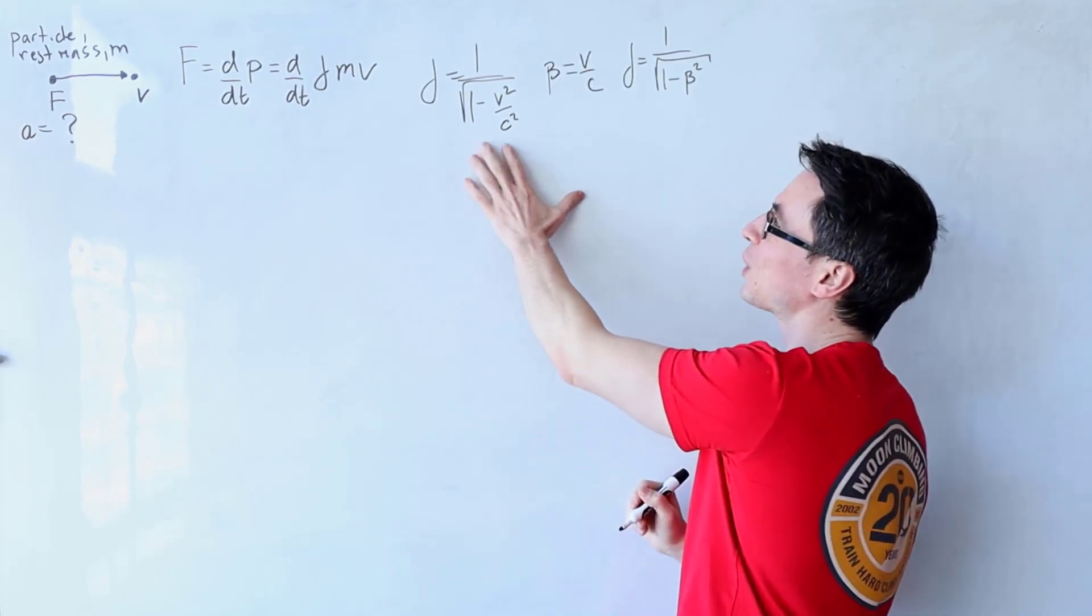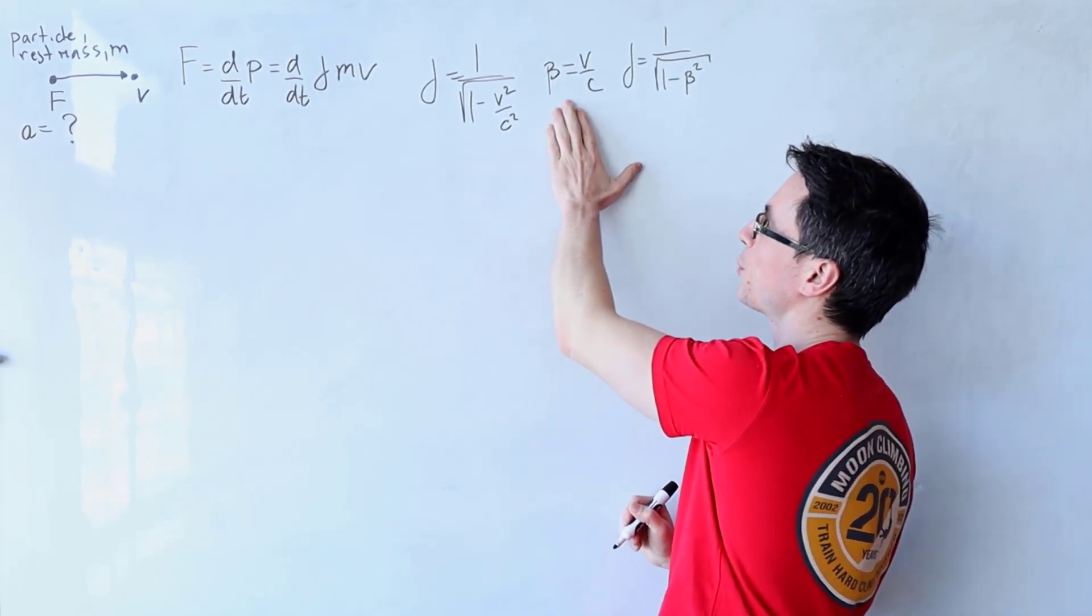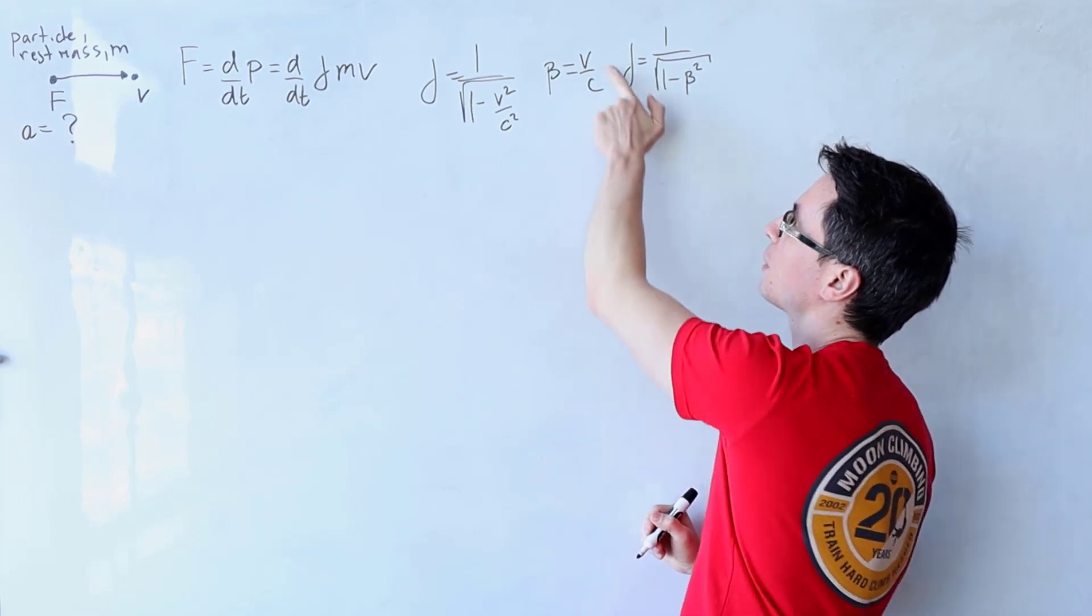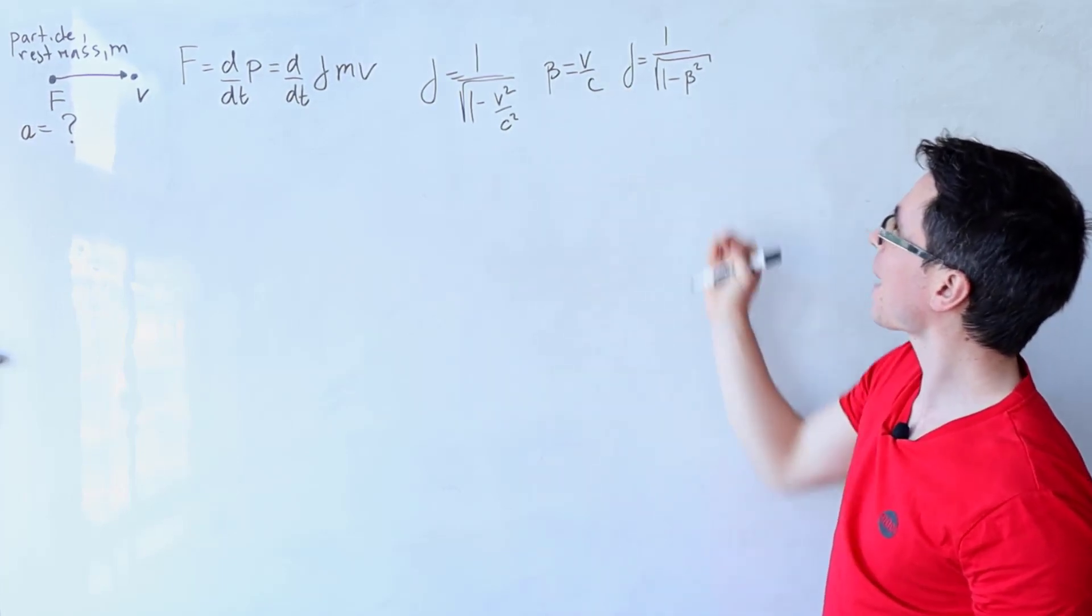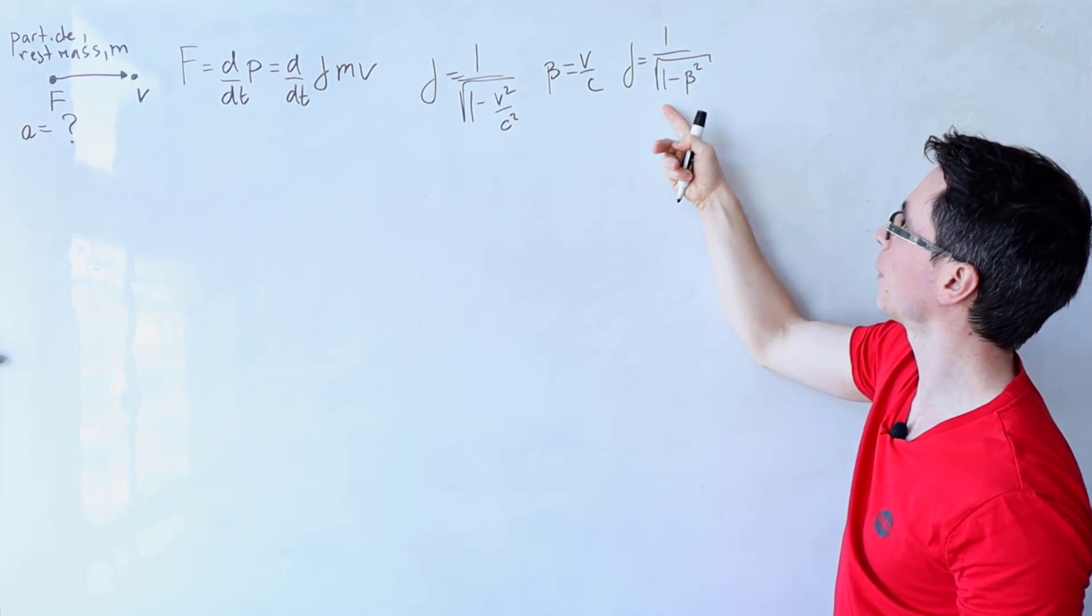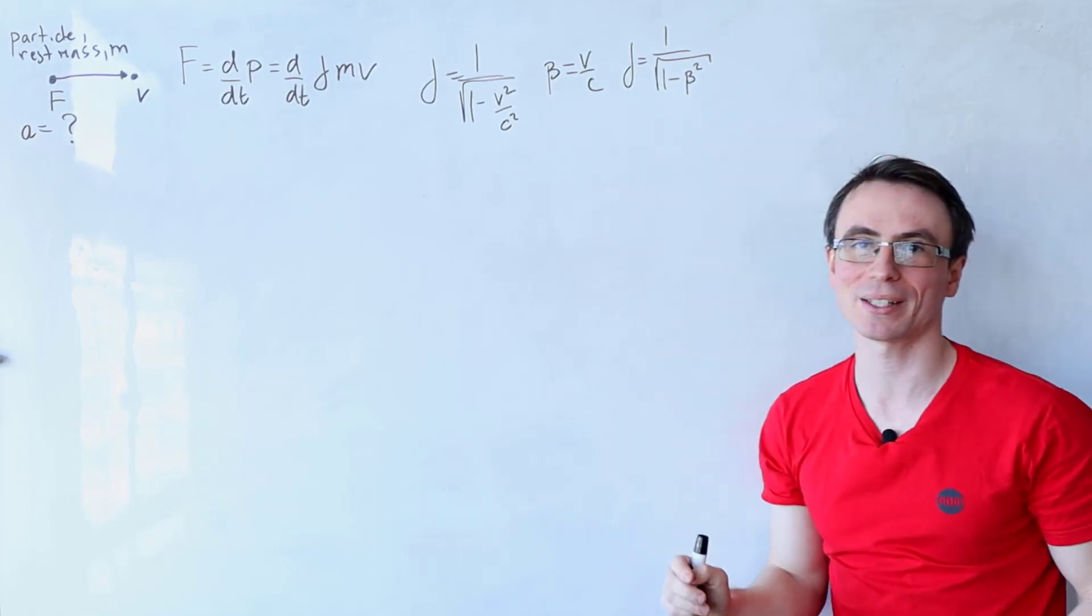Because we're unlikely to be doing a lot of algebra with this, we're going to introduce this factor beta, which is just equal to v over c, meaning that our gamma factor is just equal to one over the square root of one minus beta squared.